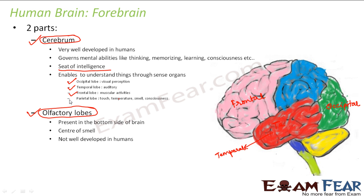Then comes the parietal lobe, shown in blue, which controls touch, temperature, smell, and consciousness. So the cerebrum is divided into these four lobes — occipital, temporal, frontal, and parietal — each performing a specific function. The cerebrum is also the seat of intelligence, governing thinking, memorizing, and learning, and it is very well developed in humans.